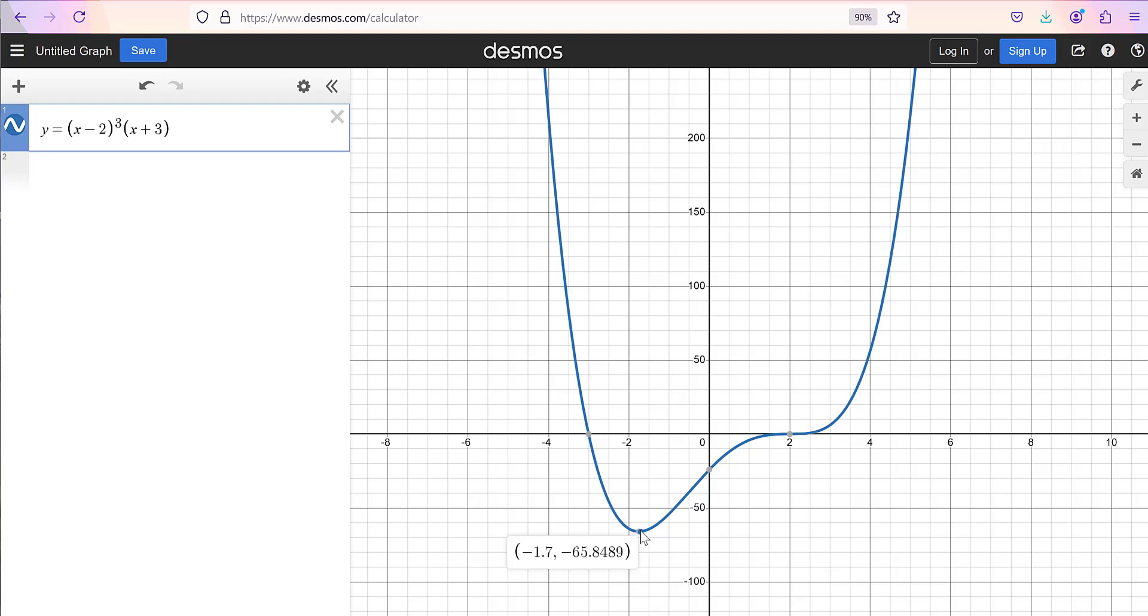Now is there any other place where the function's decreasing? Well let's see what happens after this point. As we keep on going from negative 1.7 roughly and we keep on going, it looks like the function is increasing. I hit a flat spot here at x equals 2, and then I keep on going. And so it looks like it's increasing for this entire interval around negative 1.7 and then continuing to infinity.